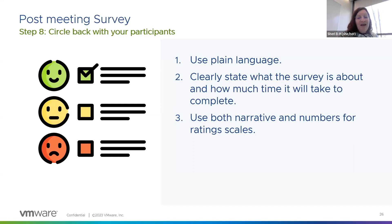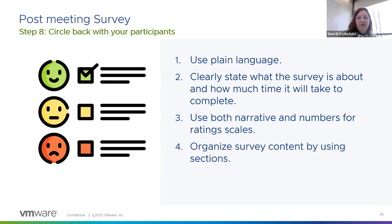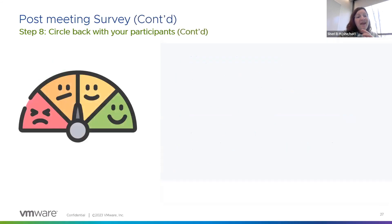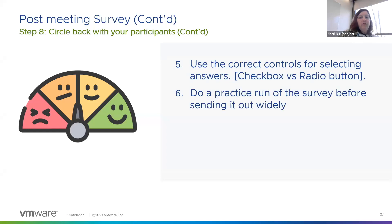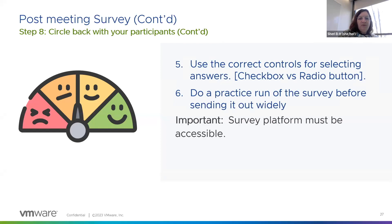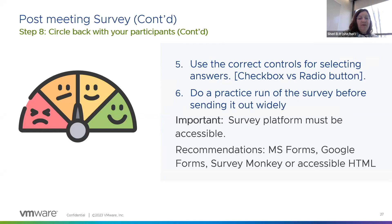That's why you need to make sure you've got both quantitative and qualitative data so you can reconcile those two. Organize your survey content by using sections — people might want to take a break, and you don't want all that survey data to time out. If it does, I guarantee they're not going to come back and do it again. Use the right controls: checkboxes for multiple answers, radio buttons for a single answer. Definitely do a practice run on the survey before sending it out widely. Make sure you're choosing an accessible survey platform. The five we recommend: Microsoft Forms, Google Forms, Survey Monkey, accessible HTML, and Qualtrics.